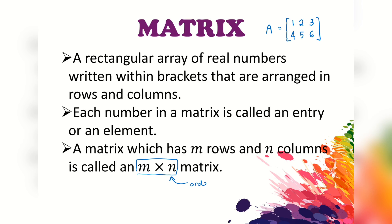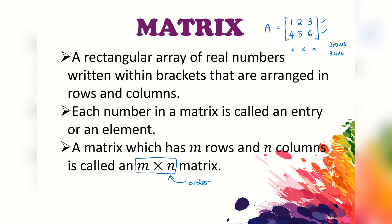m by n is the order of the matrix. If we take a look at matrix A, this matrix has two rows and three columns. So we can say that matrix A is a two by three matrix.